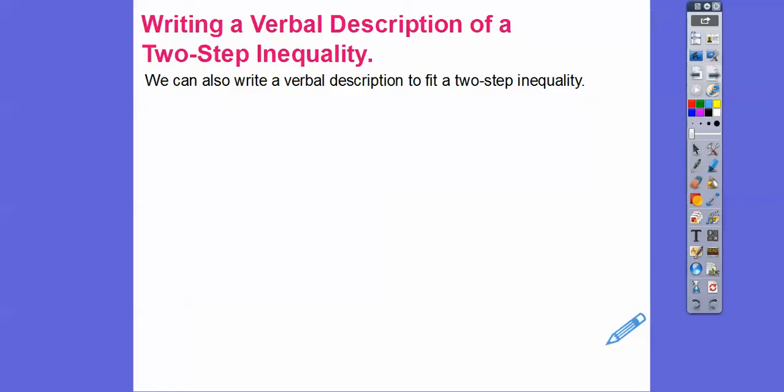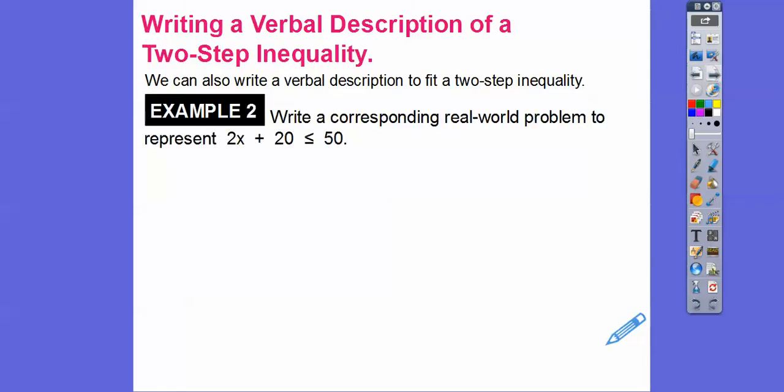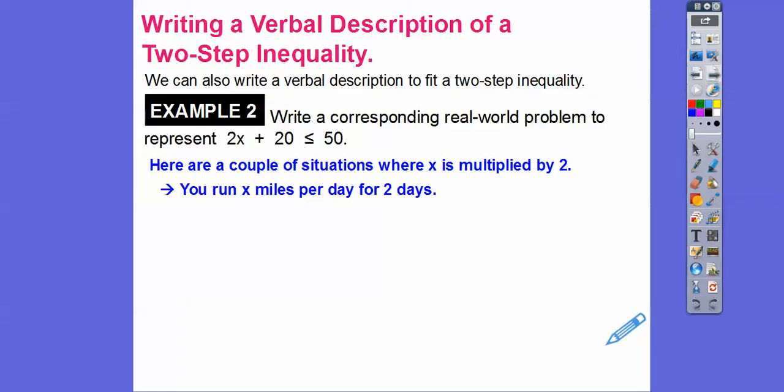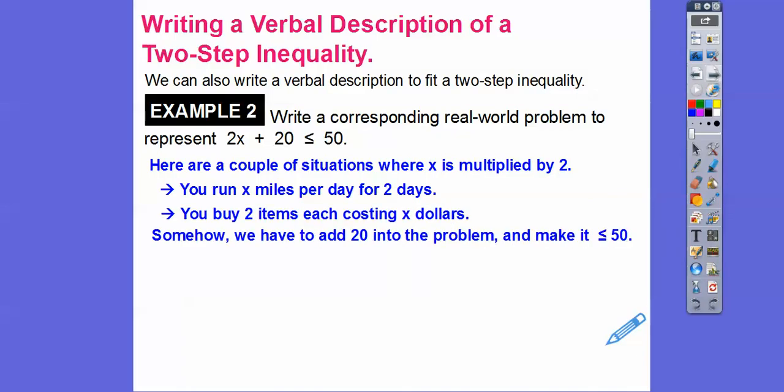We can also write a verbal description to fit a two-step inequality. So here we go. Write a corresponding real-world problem representing 2X plus 20 less than or equal to 50. There's infinitely many correct ways to do this, you guys. So here's a couple of situations where X is multiplied by 2. I like using money, so we'll do that in the next one. So you run X miles per day for two days, or you buy two items each that cost X dollars. So somehow we have to add this 20 into the expression or into the inequality. It has to be less than or equal to or at most, and then make it less than or equal to 50.